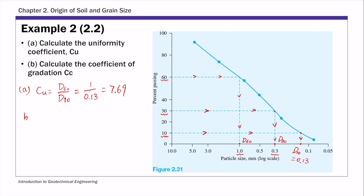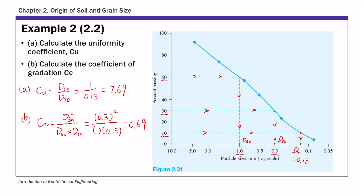Part b is C sub c, the coefficient of gradation. That's d30 squared over d60 times d10. Substituting the numbers read from the curve: 0.3 squared over 1 times 0.13, and that equals 0.69. So that's Example 2 — a straightforward example of calculating these two coefficients given a particle size distribution curve.